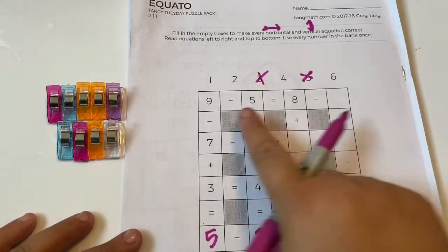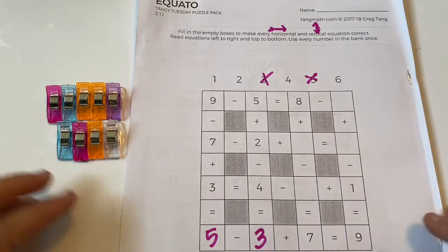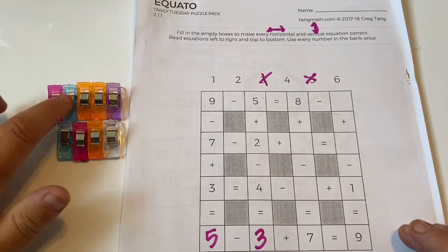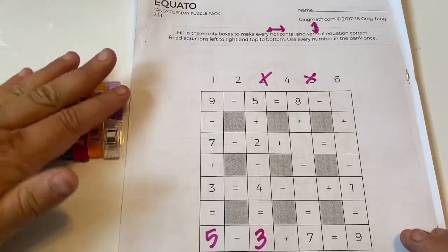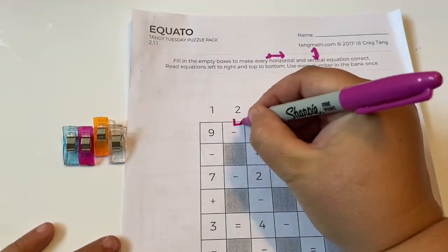Okay, so now we're gonna go maybe side to side. Okay, nine minus five. One, two, three, four, five, six, seven, eight, nine. Perfect, minus five equals four. So on this side is four.